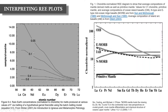As we increase the degree of partial melting, the LREE concentrations relative to HREEs become smaller, because those incompatible elements enriched in smaller melt fractions become diluted by the liberation of other elements. Additionally, heavy rare earth elements are compatible within garnet, so we'd have to melt all of the garnet to liberate the HREEs from the source.